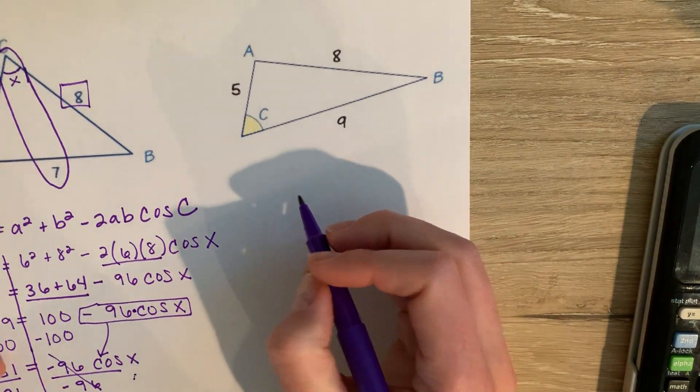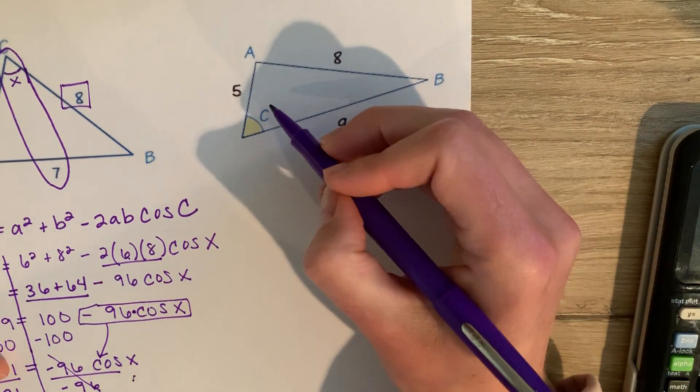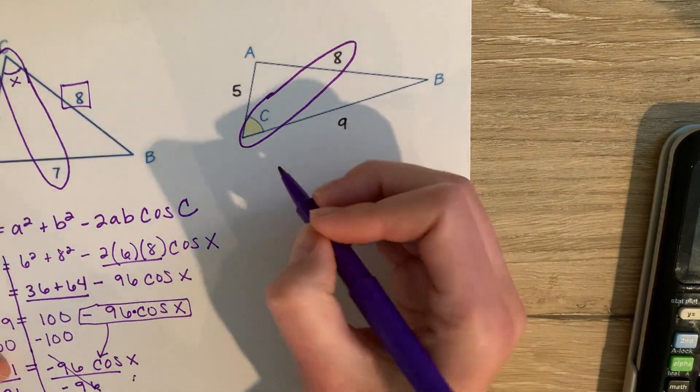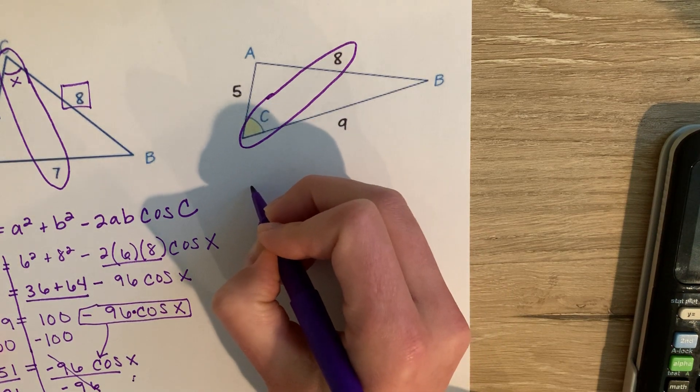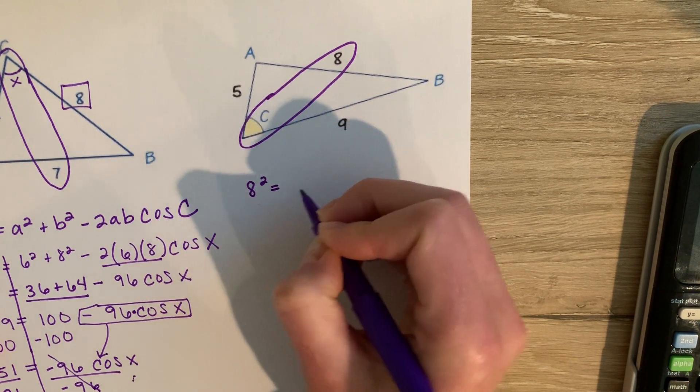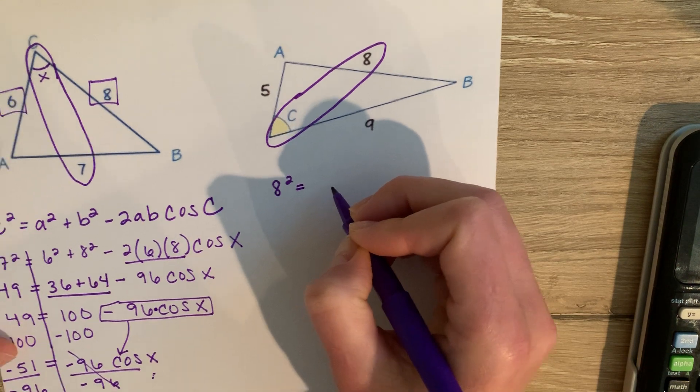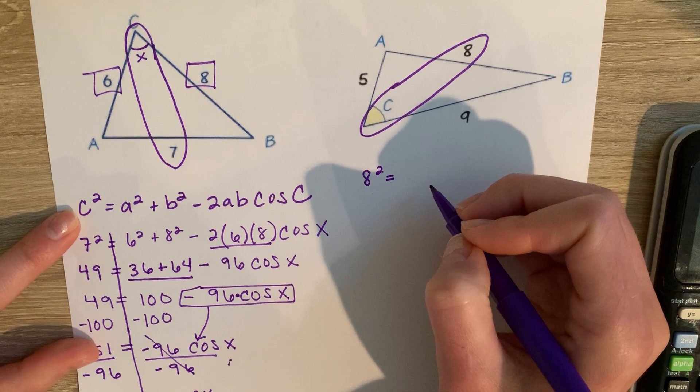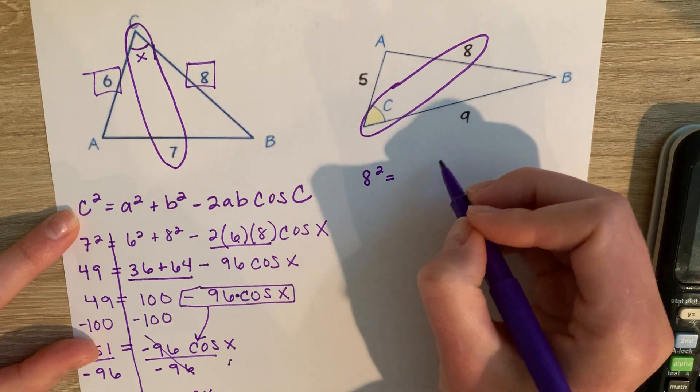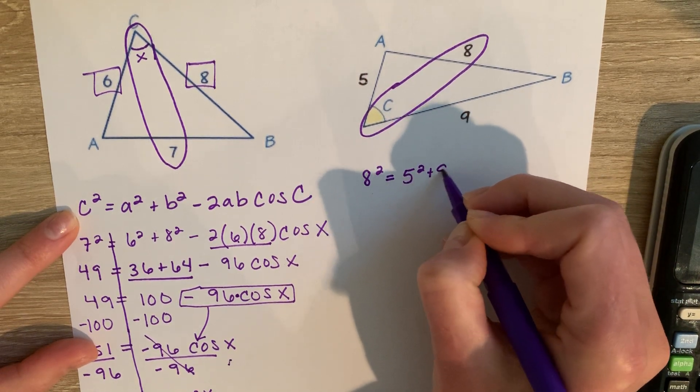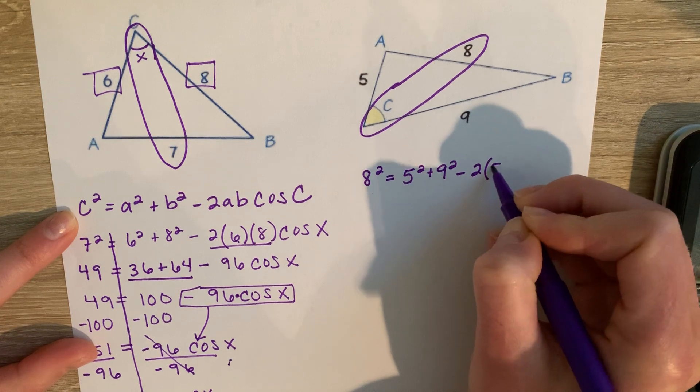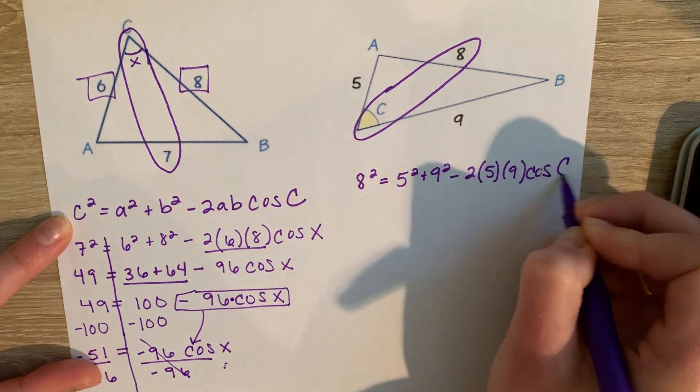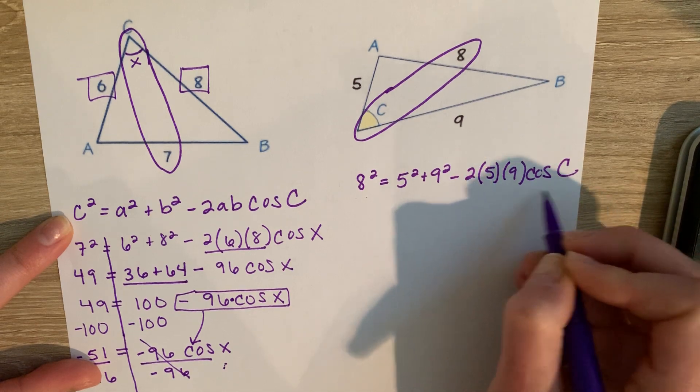The next example. Again, we're trying to find angle C. So I have my pair here. So I have 8 as my side, 8 squared. I'm using the formula that's written out for me right here. My other two sides are 5 and 9. So 5 and 9 go in for A and B, and I'm trying to find my angle C.